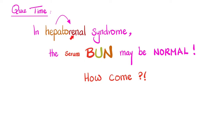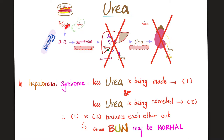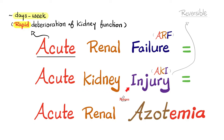In hepatorenal syndrome — a kidney disease caused by liver disease — the serum BUN might actually be normal. Here's why: ammonia is made by amino acid metabolism; the liver converts ammonia into urea; then the kidney excretes that urea. Kidney failure alone raises urea because no one excretes it. Liver failure lowers urea because no one produces it. In hepatorenal syndrome, both effects cancel out, so serum BUN may be normal.